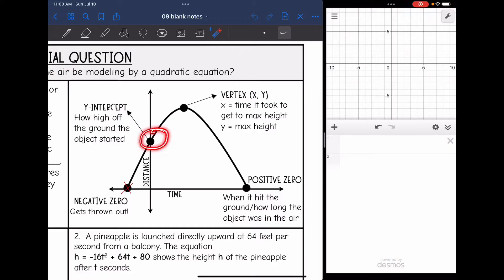The y-intercept, just like in a linear equation, is generally our starting point. That is how high off the ground the object started. The vertex is that maximum height. The x value is the time it took to get the maximum height since x-axis is time, and y is the maximum height since the y-axis is the distance.